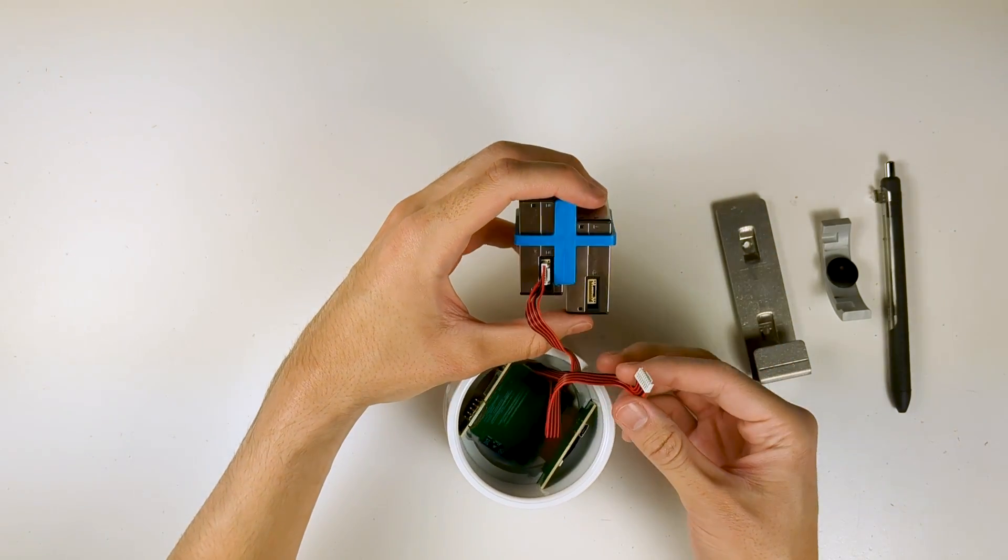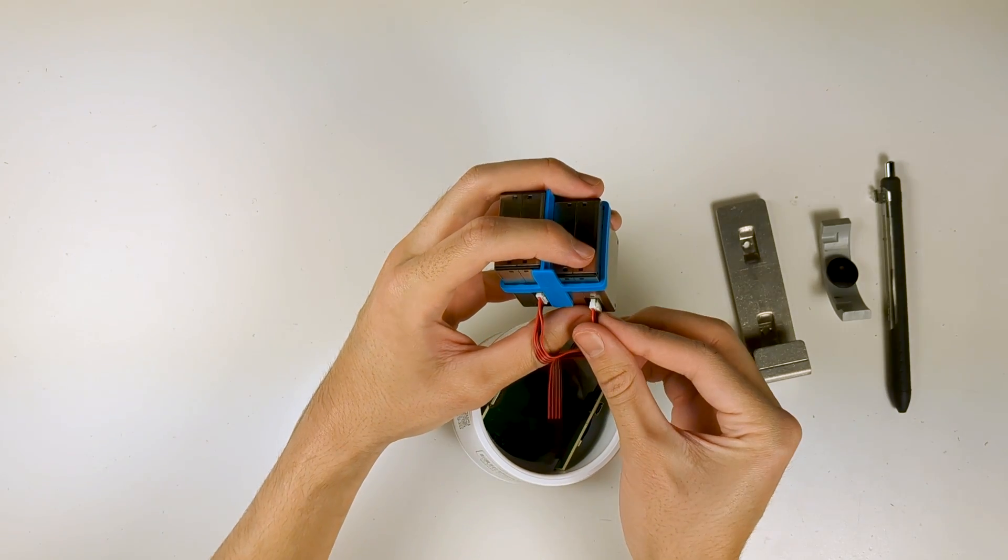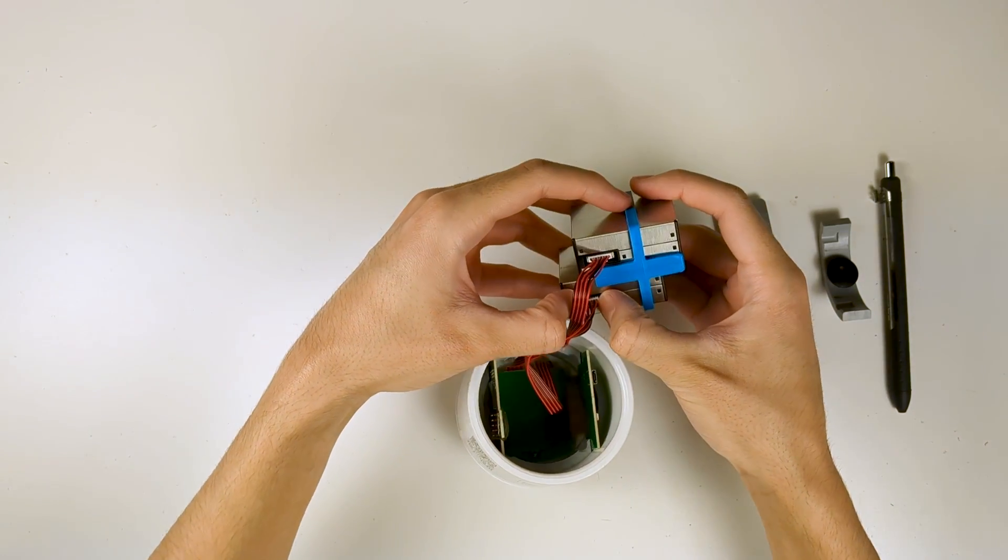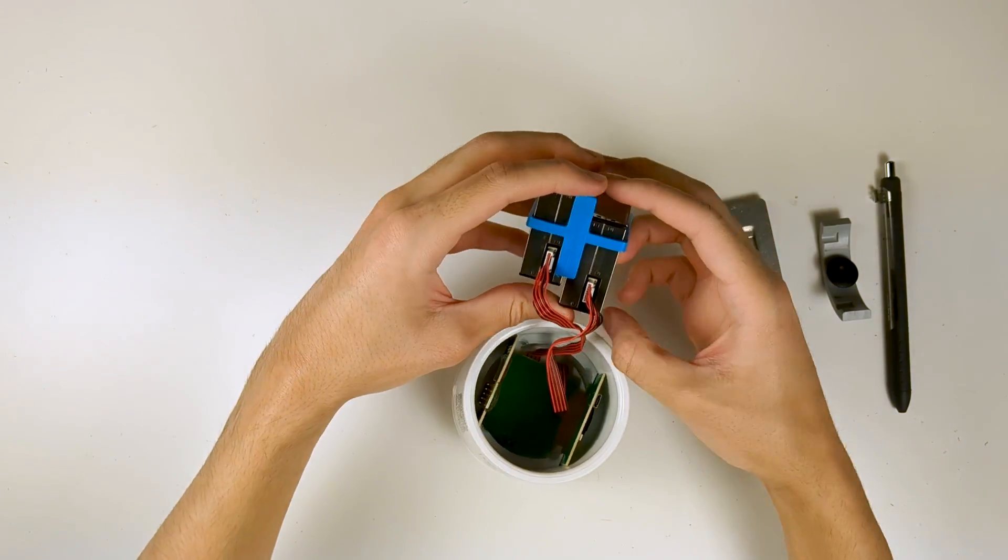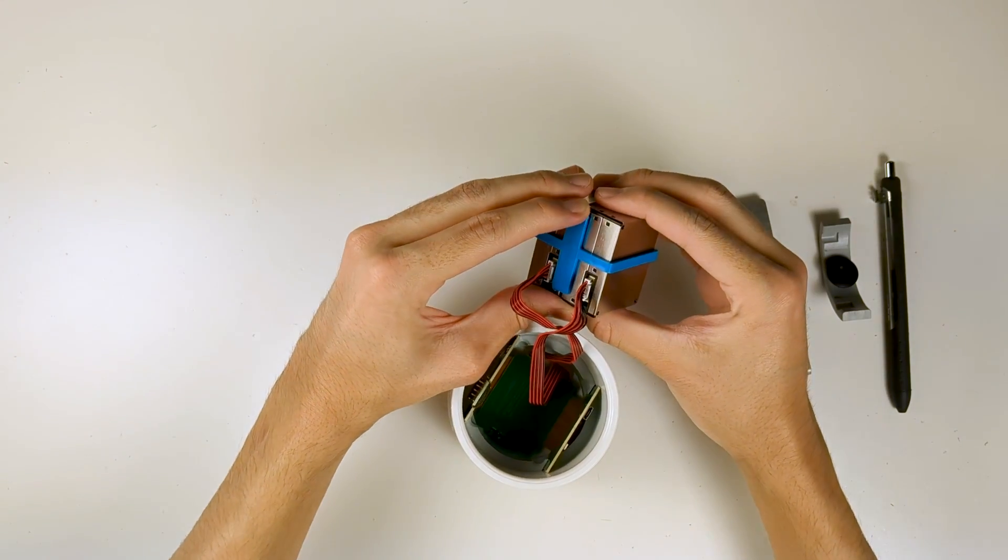Push on the sides of each cable to ensure they are fully connected. The small latch will secure them in place. Slide the laser counters back to their original positions if they were moved.